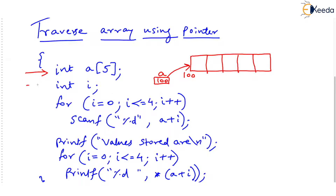We have also declared one integer variable 'i' so that we can run a for loop. Our intention is to scan all elements of the array starting from the zeroth element up to the fourth element. So we will ask the user to input a[0], a[1], a[2] and so on. Now check this for loop — it starts counter 'i' from zero and takes it up to four.